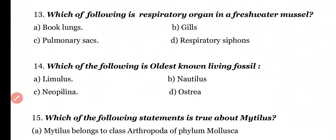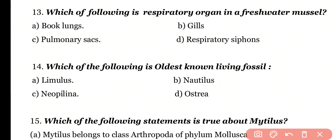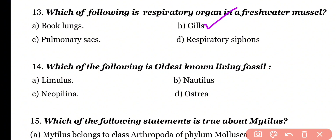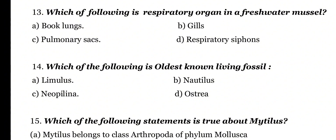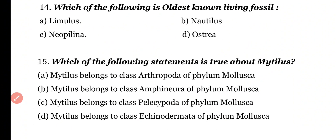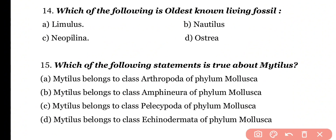Question number 13: Which of the following respiratory organs is present in freshwater mussels? Options: Book lungs, Gills, Pulmonary sac, Respiratory siphons. Correct answer is option B. Freshwater mussels use gills as their respiratory organ.